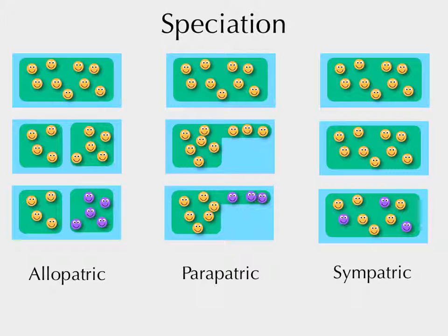Sympatric means they become two different species even within cruising range of each other. We have lots of evidence for allopatric speciation, but there are maybe a handful at most of solid examples of sympatric speciation. There's a pair of palm trees on a very small island that differ in what terrain they grow on — probably a case of sympatric speciation. With parapatric it's a continuum again.